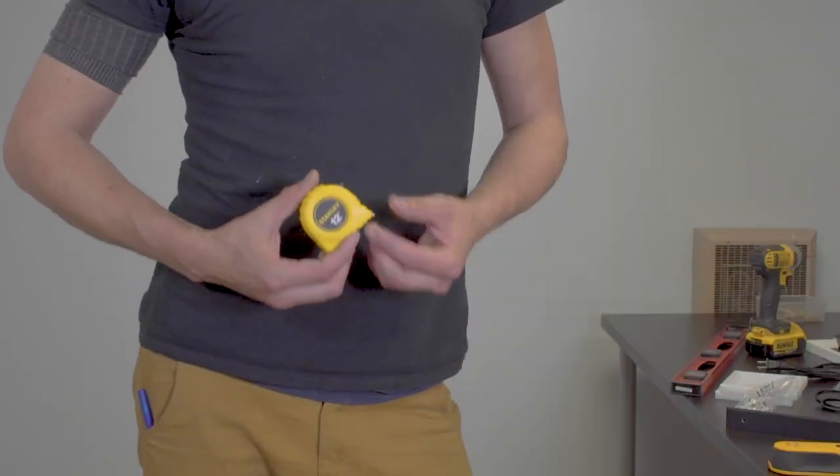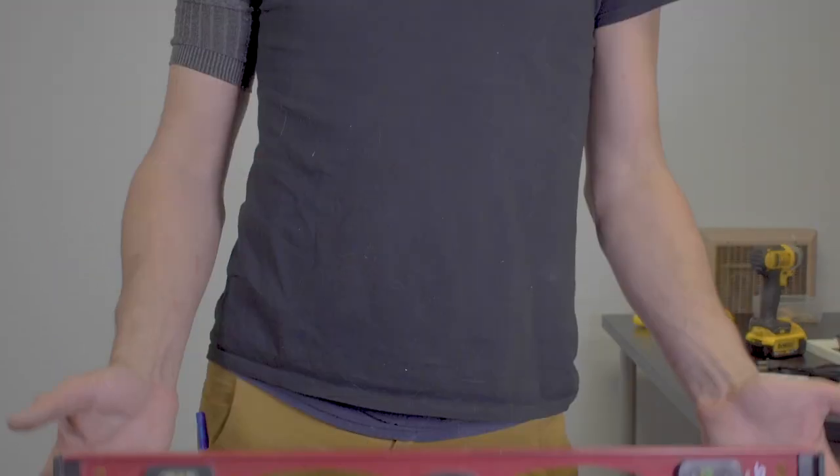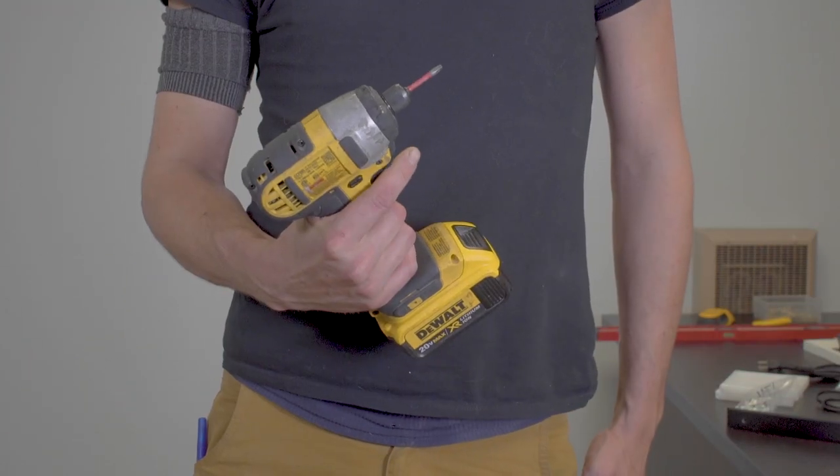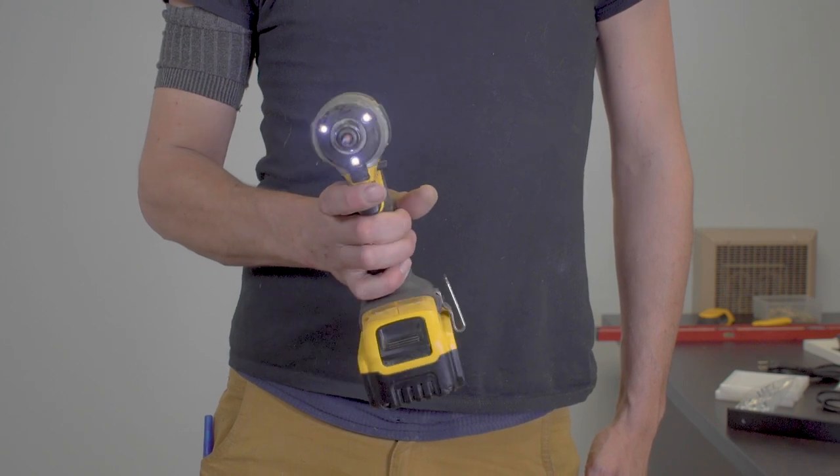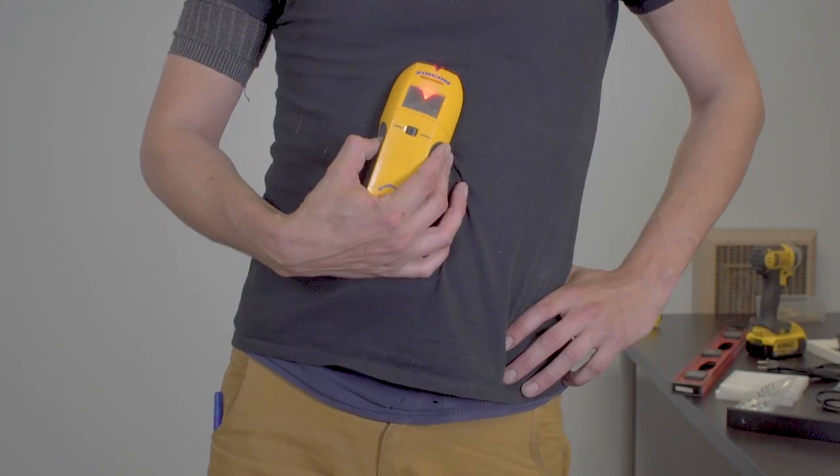Now you need some tools to assemble your farm wall. First, you'll need a tape measure and a level and a drill or impact driver with appropriate bits and a stud finder.